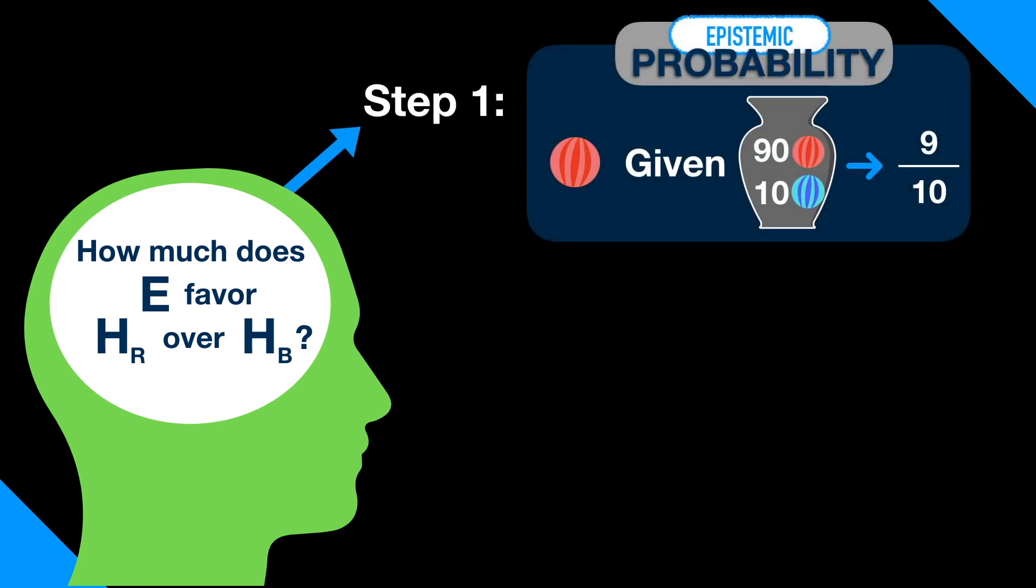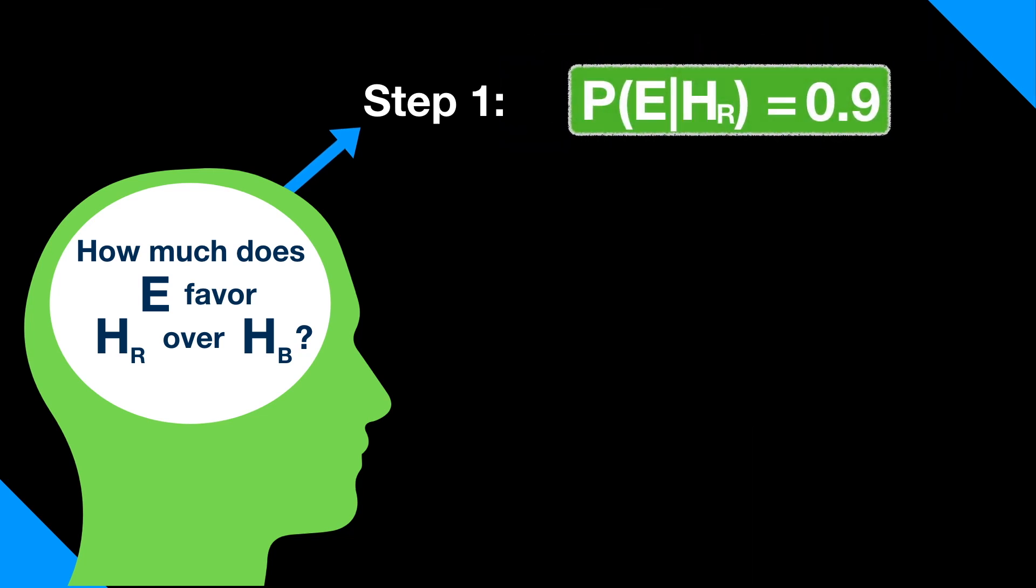First, we have to figure out how much E was to be expected if HR is taken as true. If HR is true, then 90 out of 100 marbles were red. So the epistemic probability of the evidence E, the fact that you drew a red marble, given the truth of HR is 90 out of 100, which is 9 tenths. Symbolically, we would write it like this.